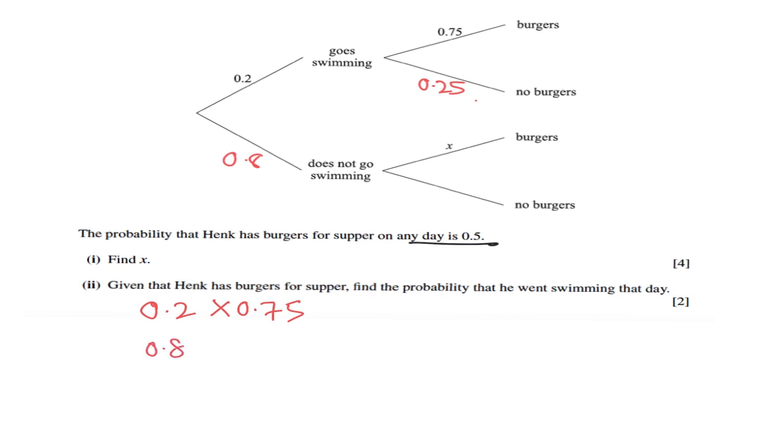First one is 0.2 where he goes swimming, multiply by 0.75 where he eats burger, or the day when he doesn't go swimming but he still eats burger which is X. When I add these two, I'm adding because it's either goes swimming with burger or does not go swimming but still eats burger. So 0.2 times 0.75 is 0.15.